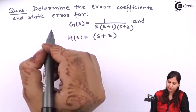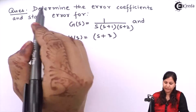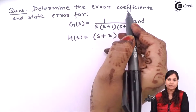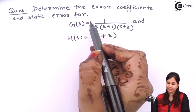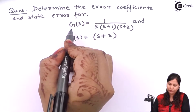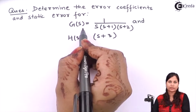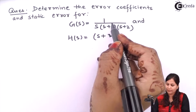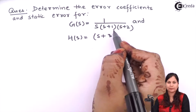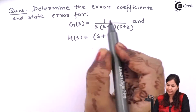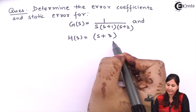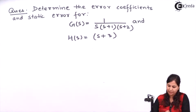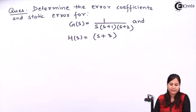We have to determine the error coefficients and static error for this system, whose open loop transfer function G(s) is 1 upon S(S+1)(S+2), and H(s), that is the feedback path gain, is S plus 3. So let's solve this problem.